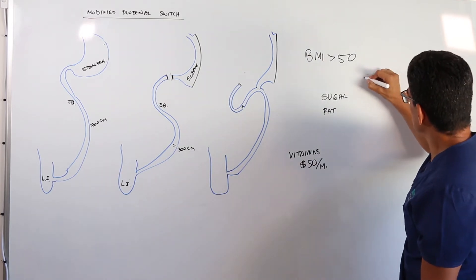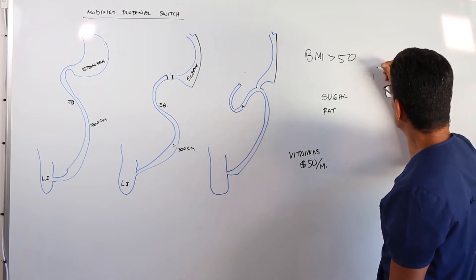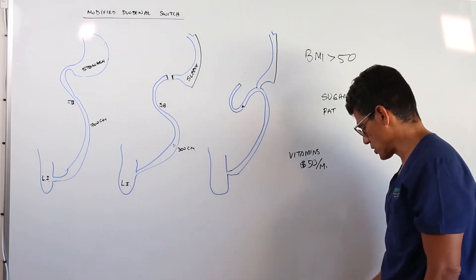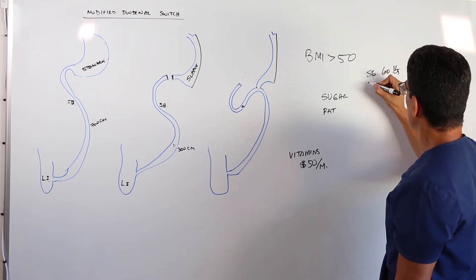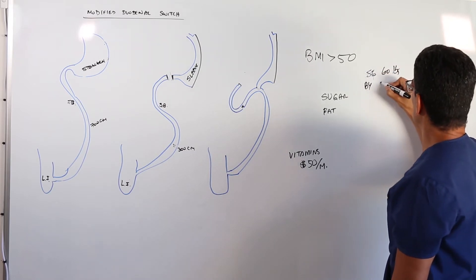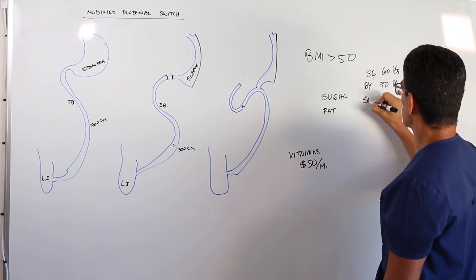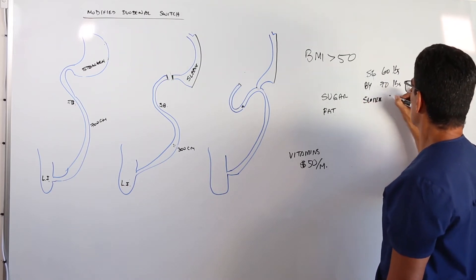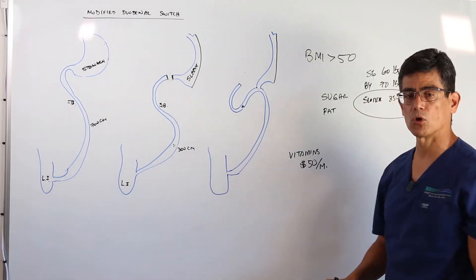For example, a sleeve gastrectomy, if you are a hundred pounds overweight, a sleeve can make you lose 60 pounds on average. A bypass makes you lose about 70 pounds. But a switch makes you lose between 85 to 90% of the excess weight. So it's the one that can give you the most weight loss.